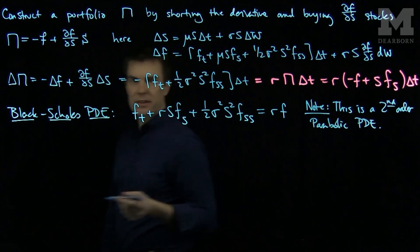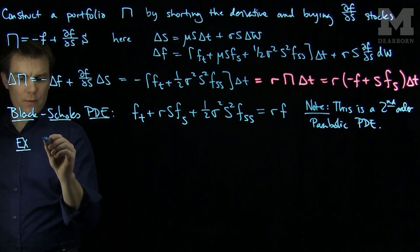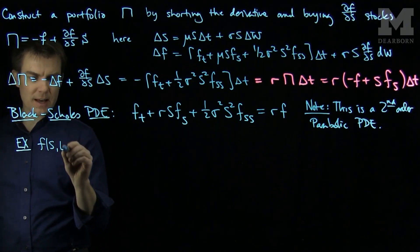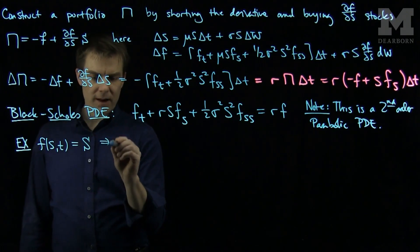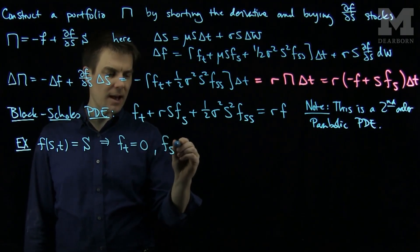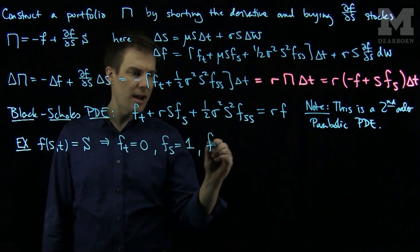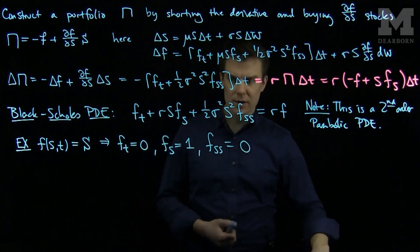So let's see some examples of solutions of the Black-Scholes equations. If we consider f(s,t) which is simply just s, then it follows that ft is zero, fs is one, and fss is zero.